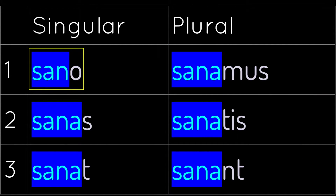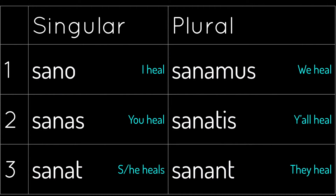If you were paying attention at the beginning, sano is also the first principal part, so you can avoid the whole question of whether the vowel is there or not — in that first box, you can always just copy the first principal part. But if you're following the formula, I wanted to go through it the roundabout way.